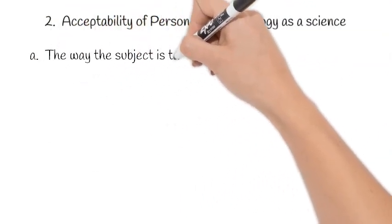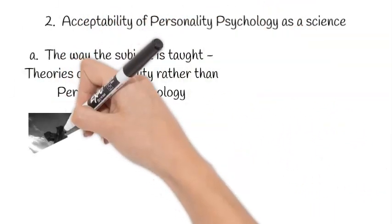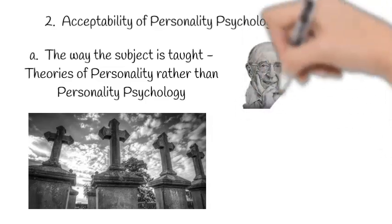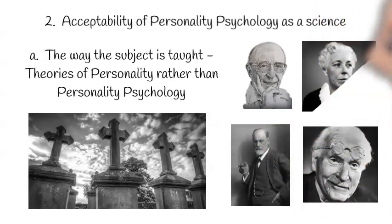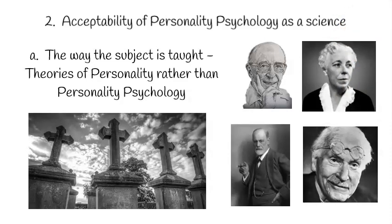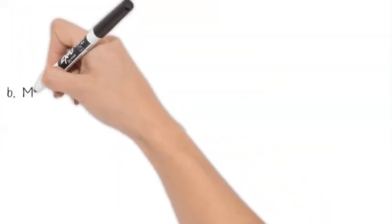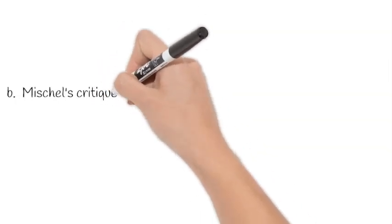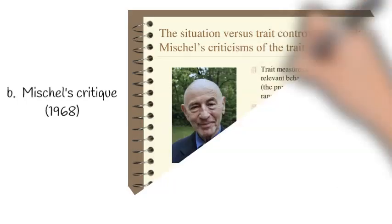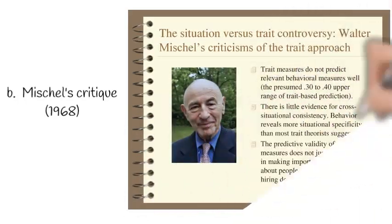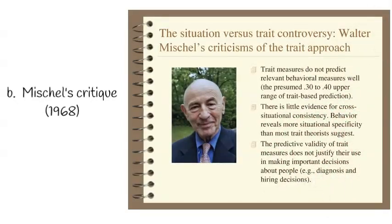A second issue in personality psychology is its acceptability as a field in psychology. One of the reasons for this is because of the way the subject is taught at the undergraduate level. Usually, personality psychology is taught using the grand tour of the graveyard approach, by giving a thorough introduction to the life and theory of brilliant but long-deceased personality theorists. Unfortunately, this approach leads to the thinking that personality psychology is irrelevant to the present times. Another reason is a critique by Walter Mischel, where he stated that there is little evidence for cross-situational consistency in the behavior of persons. Decades of research has shown that Mischel's claim is not true, and that there is indeed regularity in people's behaviors across situations largely because of their personality.